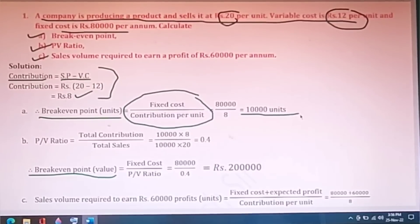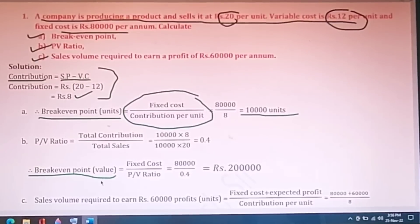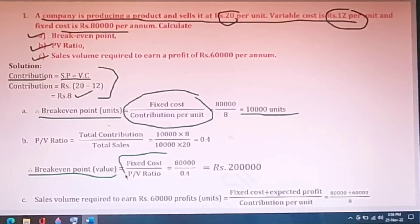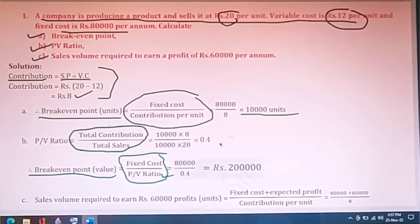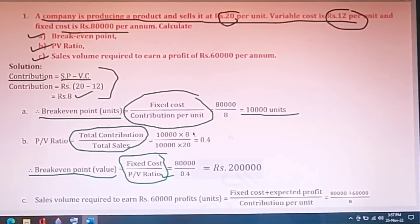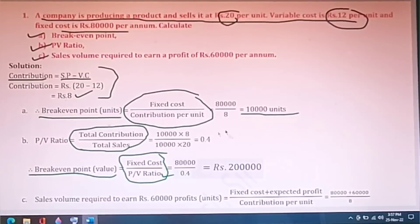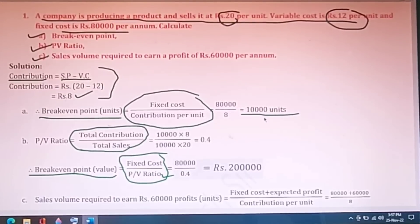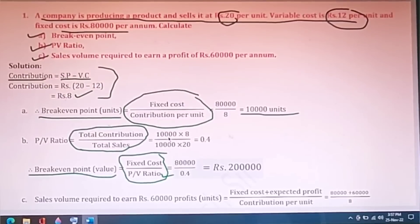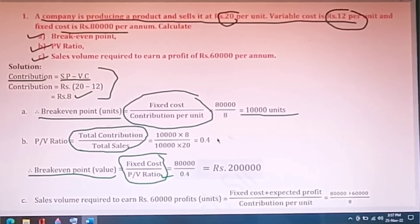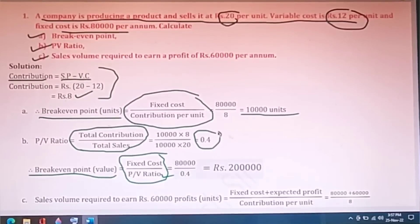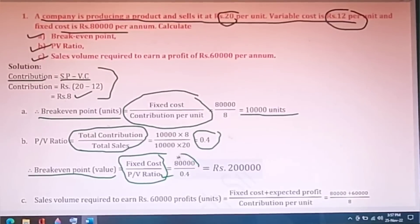Break-even point in units equals fixed cost divided by contribution per unit: 80,000 divided by 8 equals 10,000 units. To find break-even point in value, use fixed cost divided by PV ratio. To calculate PV ratio, use total contribution divided by total sales. Total contribution equals contribution per unit multiplied by BEP units, and total sales equals selling price multiplied by units. This gives PV ratio of 0.4.